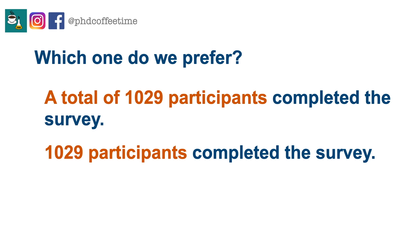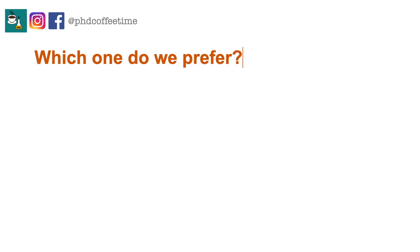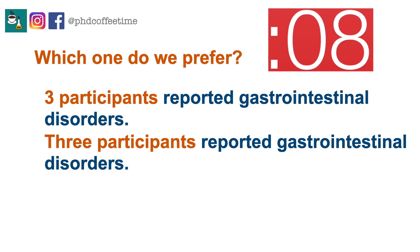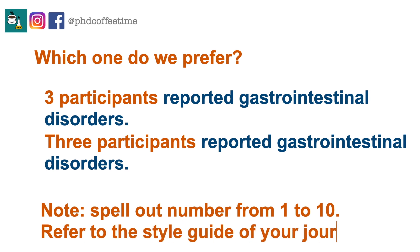As a general rule of thumb, you do not want to start a sentence with a number. You can almost always reword your sentence — for example, write 'A total of 1,029 participants completed the survey' instead of starting with '1,029 participants completed the survey.' Typically in journalism and scientific writing, the style guide will explain in detail. Most style guides I have seen expect you to spell out numbers from one to ten. Whenever you're in doubt, go to the journal's style guide — it will always tell you how to write numbers consistently.